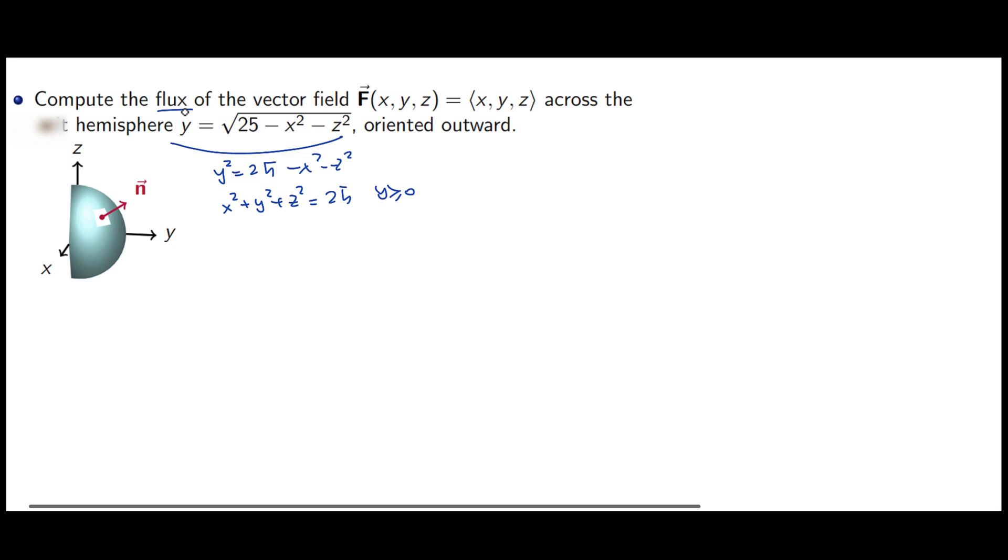In here, what I notice is that f dot n may be something that I can work with because it looks like f is radially outward and n is also radially outward, so that may actually be something that I can use. So let's compute f dot n. Let's talk about g of x, y, and z as x squared plus y squared plus z squared, and then this hemisphere is going to be part of the level surface of this function.